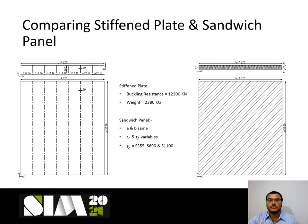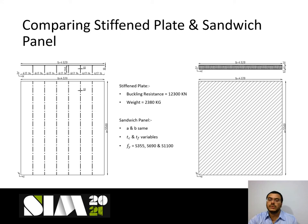We aim to find a sandwich panel with higher or equal buckling resistance to the stiffened plate but lower weight. Three different sandwich panels are considered with face plates S355, S690, and S1100. The core thickness can vary from 10 mm to 100 mm and the face thickness from 2 mm to 10 mm — many combinations exist, making trial-and-error time consuming. It is better to plot the relationship between core thickness and face thickness to achieve the same buckling resistance and weight as the stiffened plate.